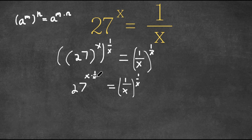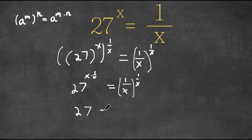x times 1 over x is simply just 1. So we have 27 to the power of 1, which is simply just 27, equals 1 over x to the power of 1 over x.